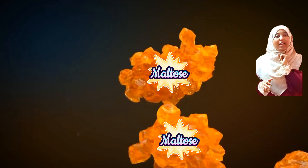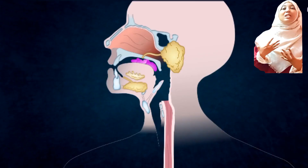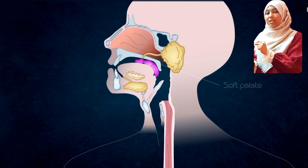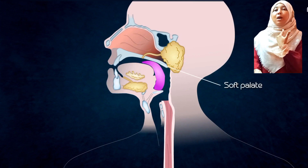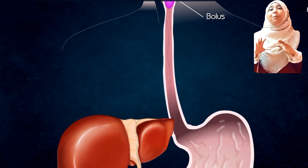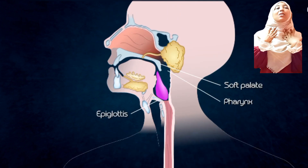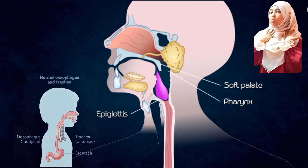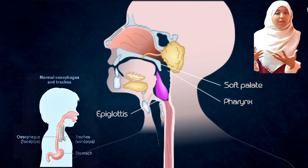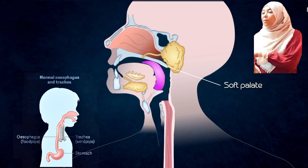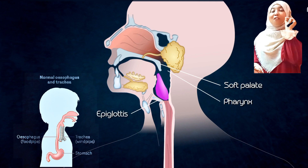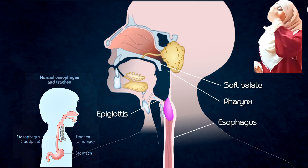The tongue manipulates the food, moving it around within the mouth, and then rolls it into a ball called a bolus, which is then pushed to the back of the mouth to be swallowed. We have a flap called the epiglottis. In our neck we have two tube-like structures: the esophagus, or gullet, which is the food pipe, and the trachea, the passage for air. The epiglottis covers the trachea when you swallow, ensuring the bolus passes into the esophagus and not the trachea.